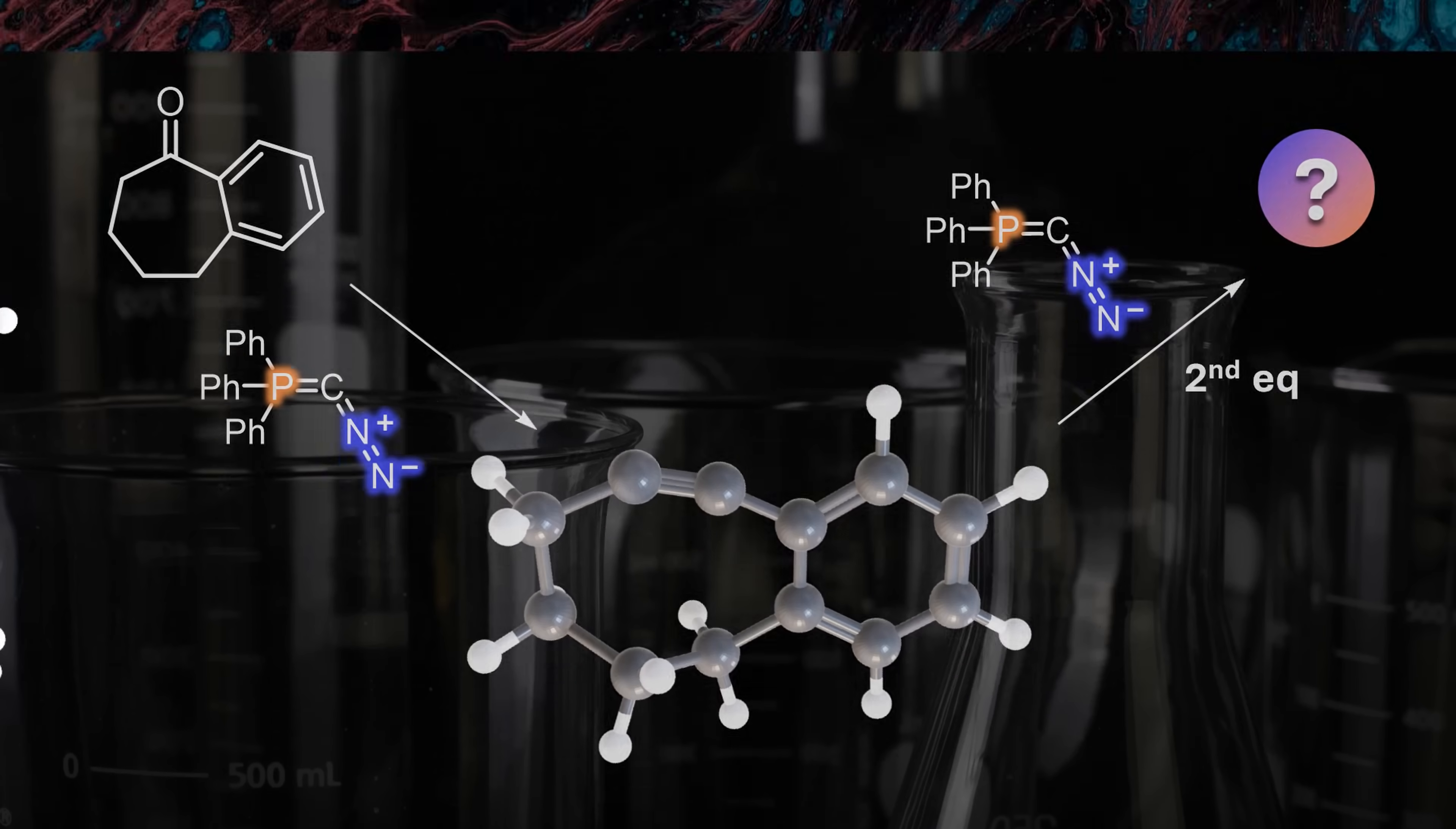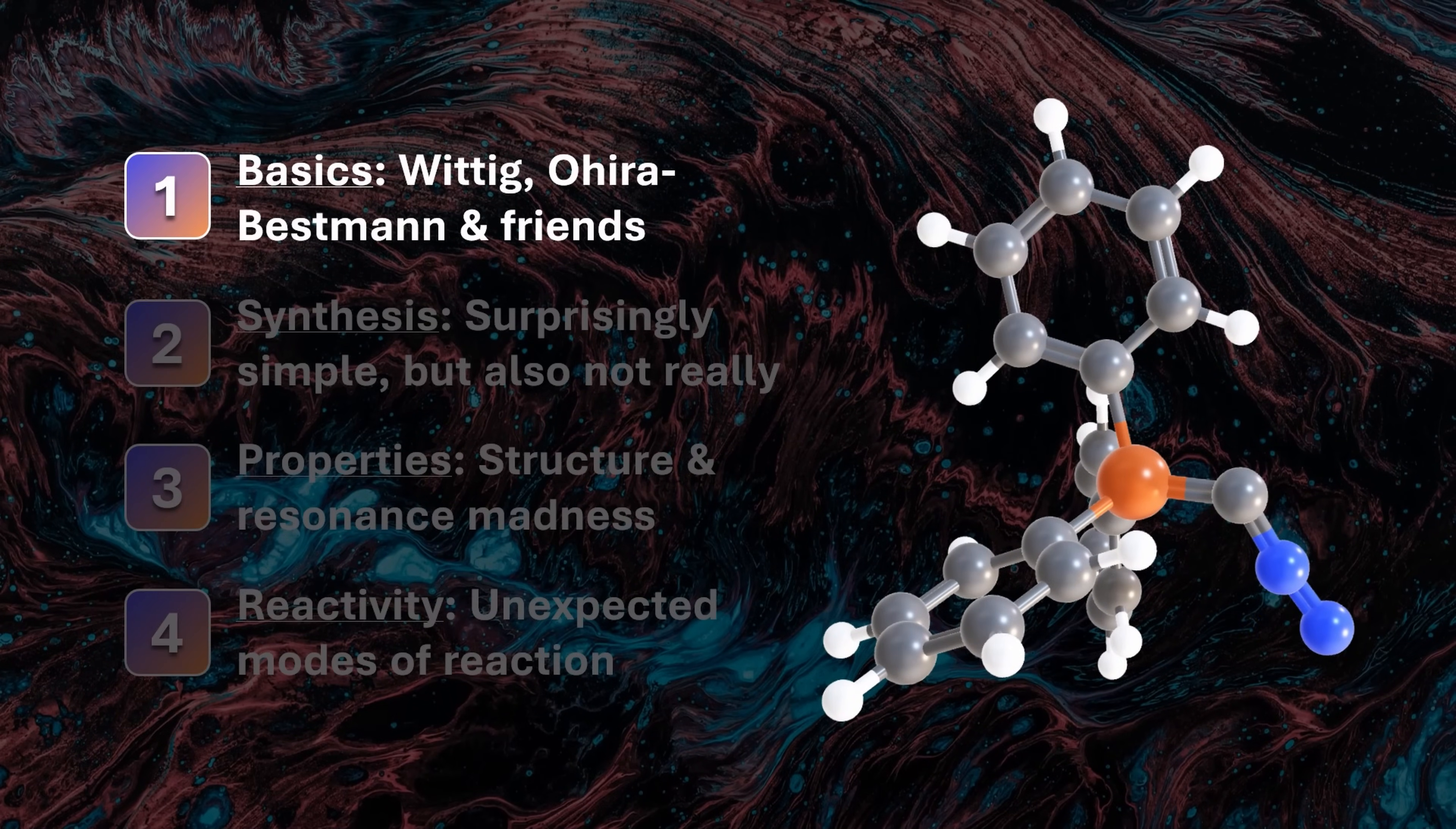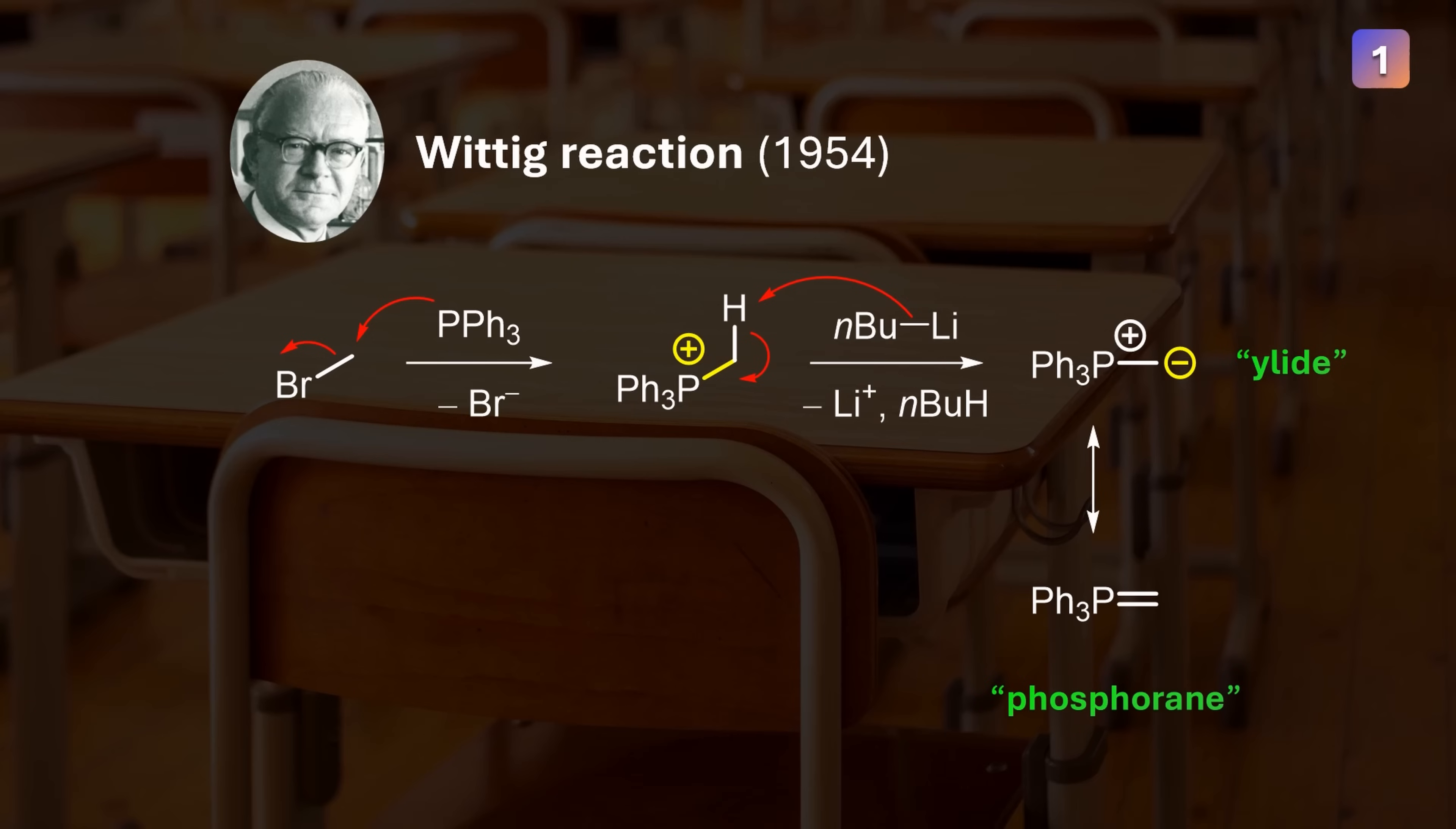Let's first briefly recap some basic knowledge before going into the fascinating synthesis, structure, and reactivity of this molecule. You've probably heard of Wittig reagents, also known as phosphonium ylids, which have a negatively charged carbon sitting next to positively charged phosphorus. These structures can be formed by deprotonation because there is a stabilizing resonance form with a double bond between the two atoms, also called a phosphorane.